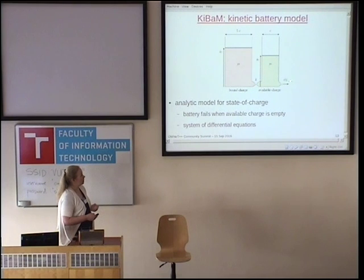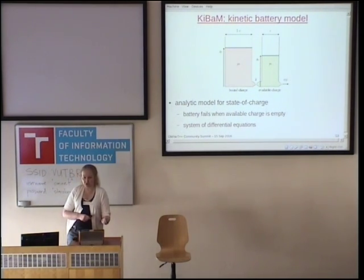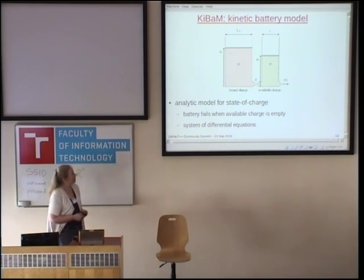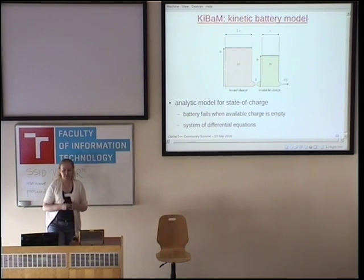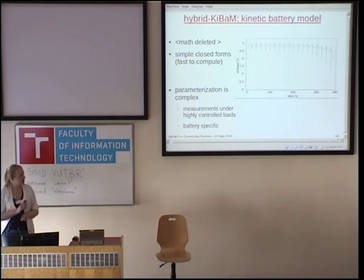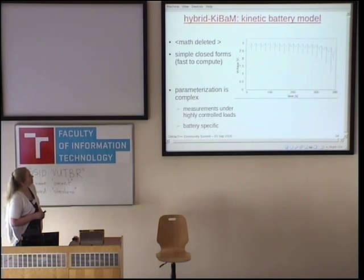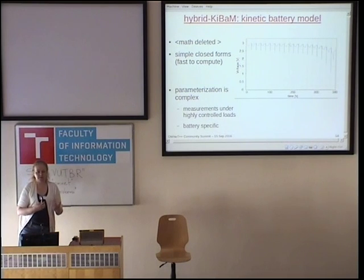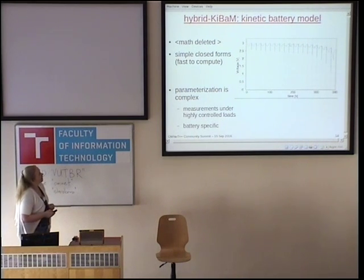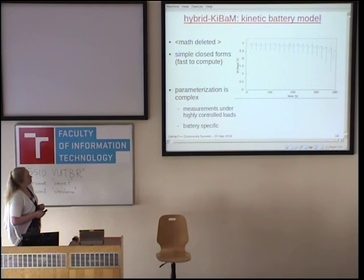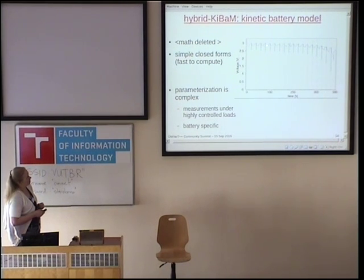This gives us some of the behaviors we want. It's a very simple model, but if we drain the current very, very quickly, we'll drain the available current before it's had time to be replenished from the bound current — so a very high current means the battery will drain quickly, leaving a lot of stranded charge. By contrast, if we drain with a very low current, the bound charge will be able to replenish the available charge quickly enough to keep it full. Similarly, with an intermittent discharge, we stop drawing current periodically and charge flows from the bound well to the available well. You can write this as a system of differential equations — in terms of fairly simple closed forms, so it's not very expensive to compute. We use those differential equations to model the general shape of the state of charge.